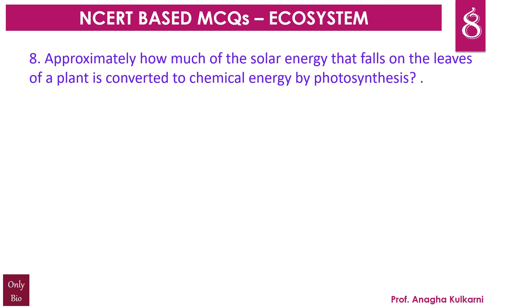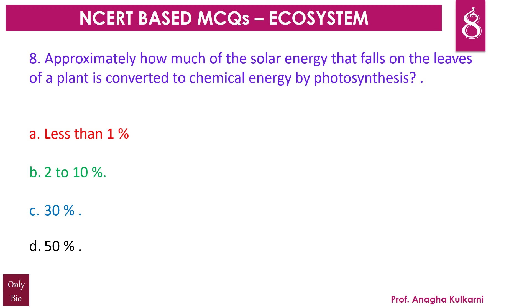Question number 8. Approximately how much of the solar energy that falls on the leaves of a plant is converted into chemical energy by photosynthesis? A. less than 1%, B. 2–10%, C. 30%, D. 50%. The correct answer is B. Approximately 2–10% of the solar energy that falls on the leaves of a plant is converted into chemical energy by photosynthesis.